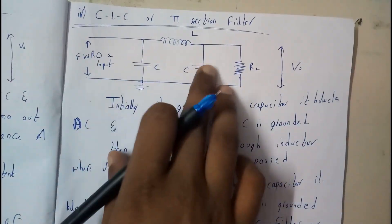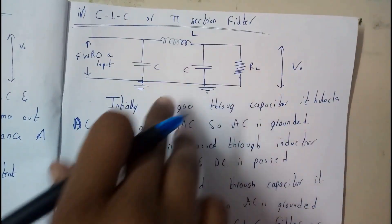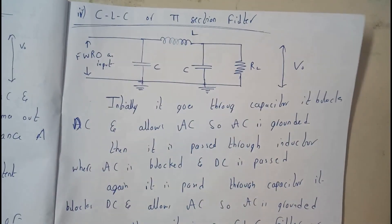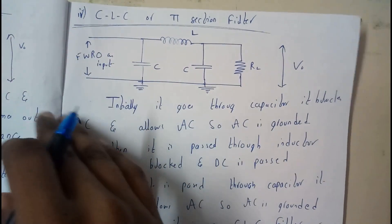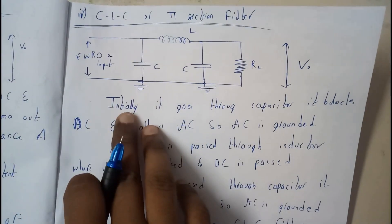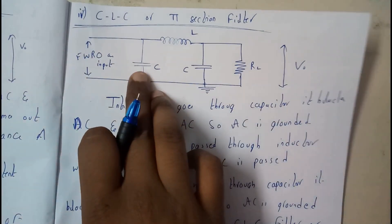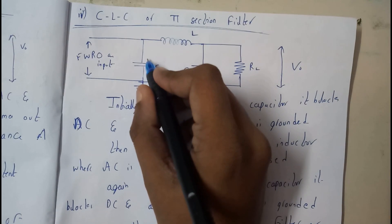Two capacitors and an inductor form the shape pi. Initially, the input from the full wave rectifier's output travels through the capacitor. The capacitor blocks DC and allows AC, so the AC is grounded and the DC content moves towards the inductor.